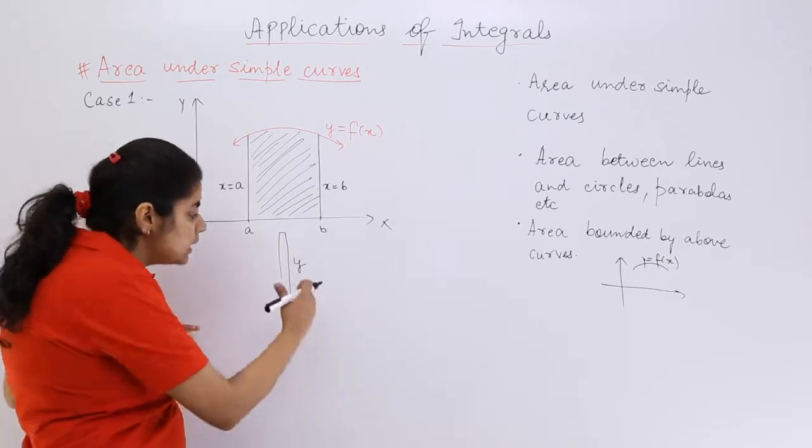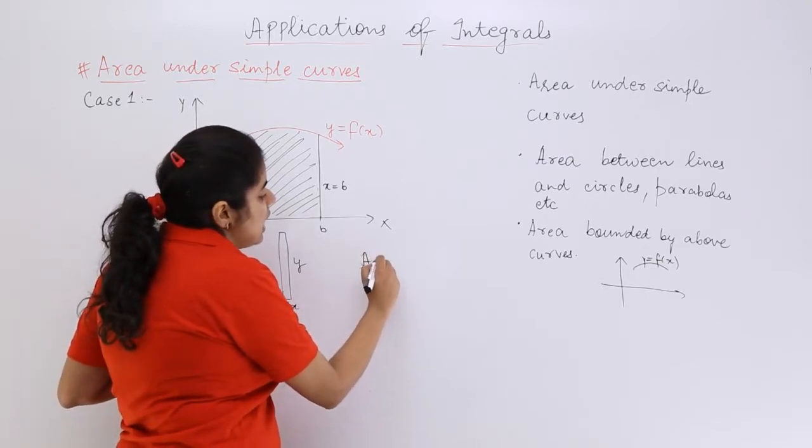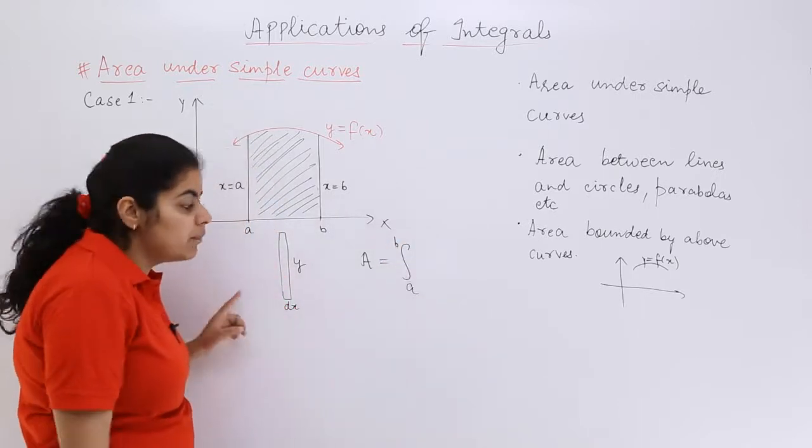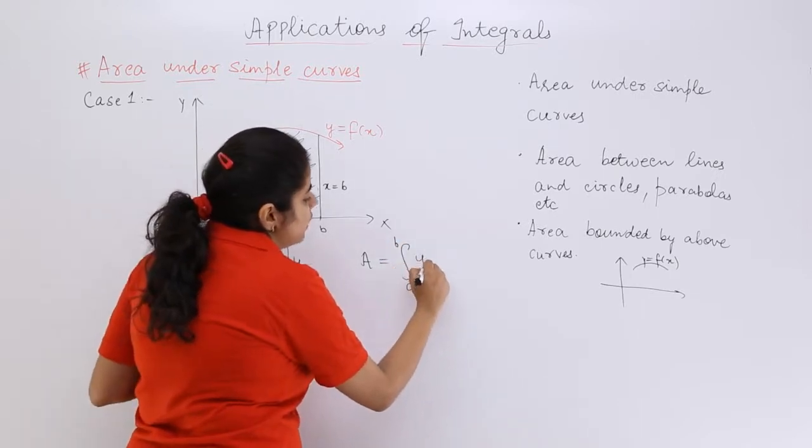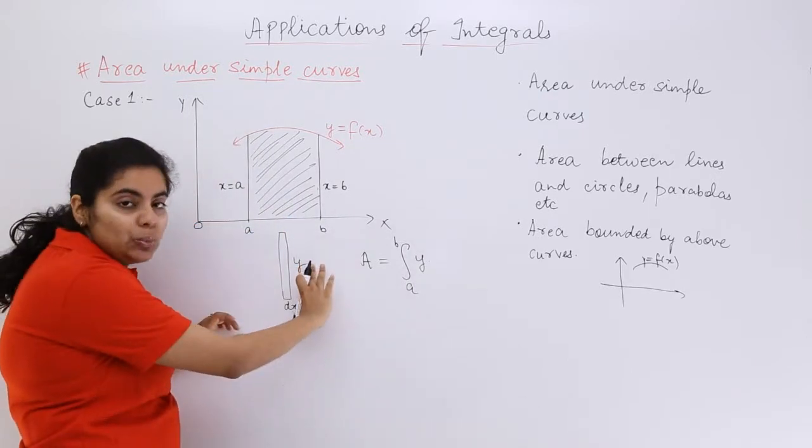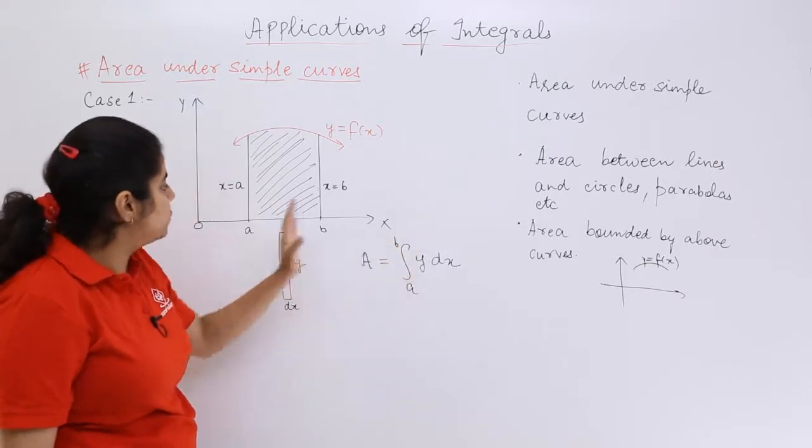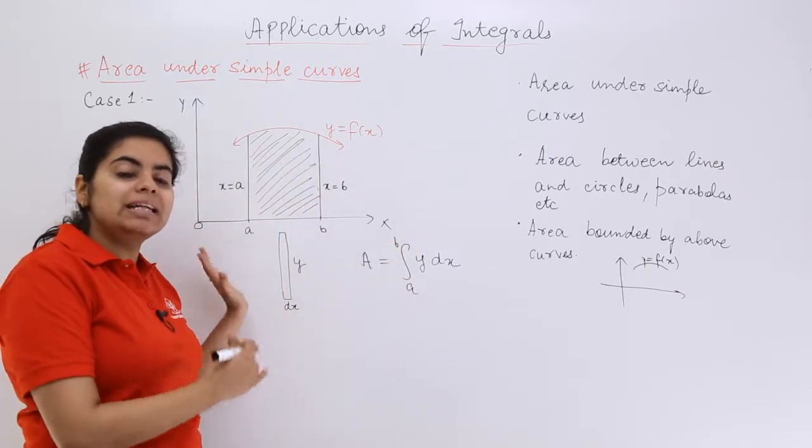My area would be equal to the integral from a to b. I have to take one strip into consideration, so length into breadth is the area of the rectangle, so y dx, and from a to b because we have to consider it fully.